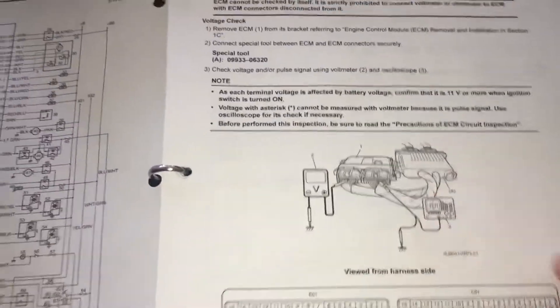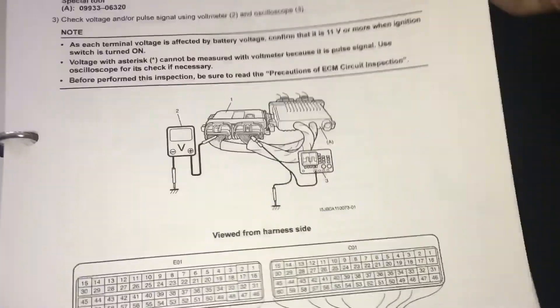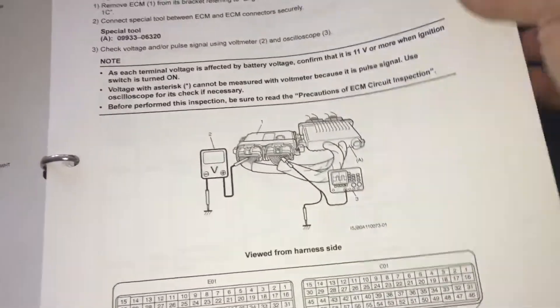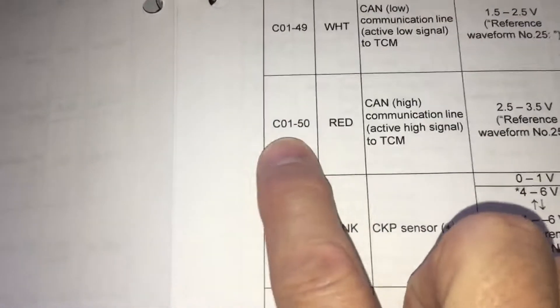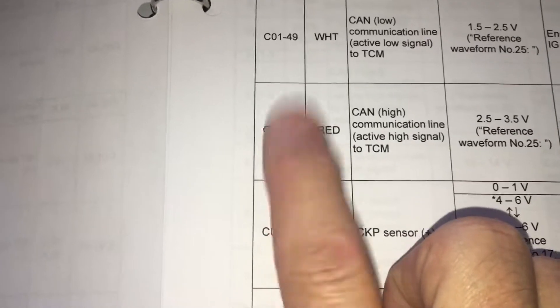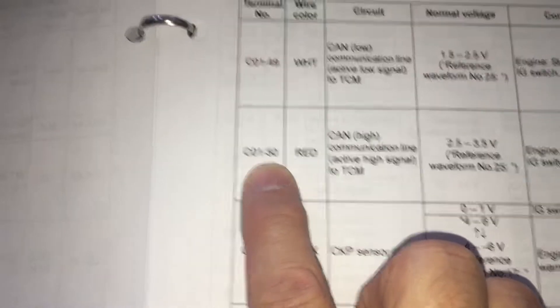In addition to that, the manual actually, the Suzuki engineers have done us the favor of giving us a matrix. So here's a, sorry, terminal number, C01, that would be the respective pin and connector that we're interested in. Sorry, it's 51, my bad.